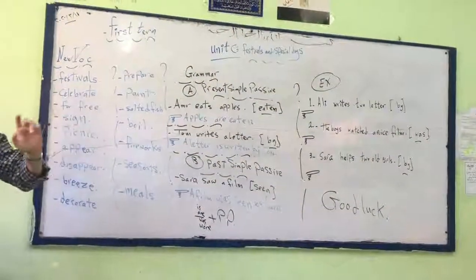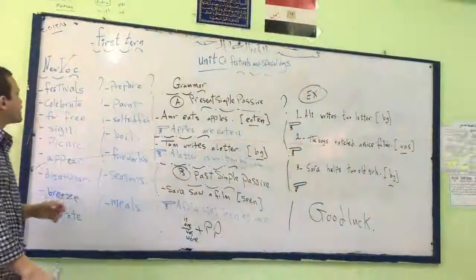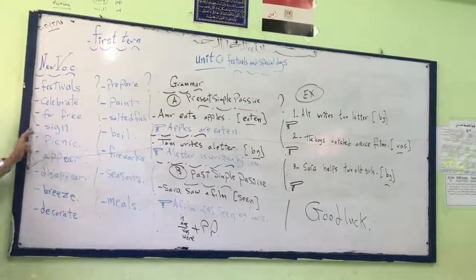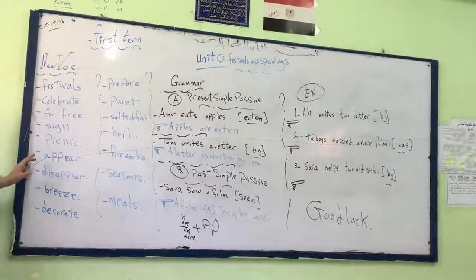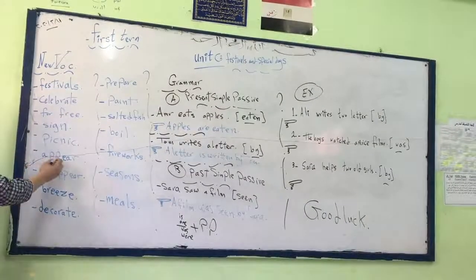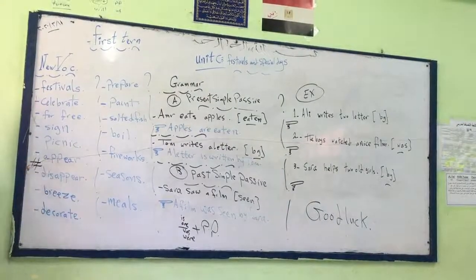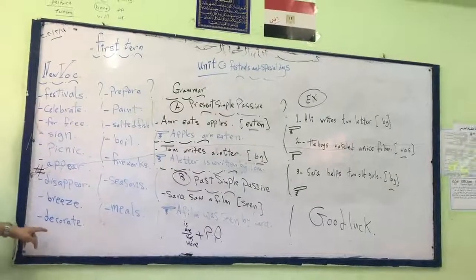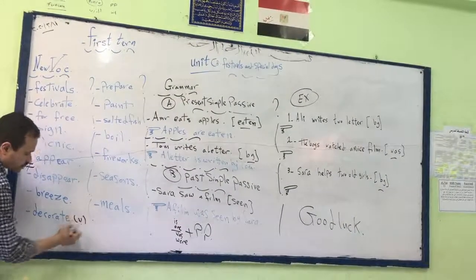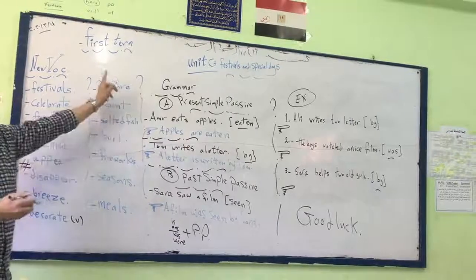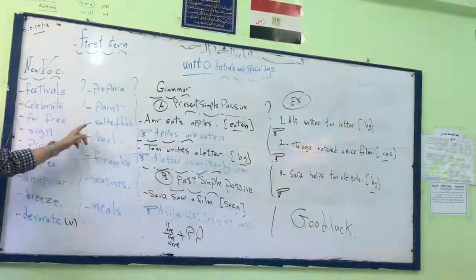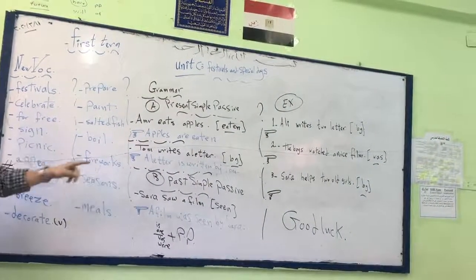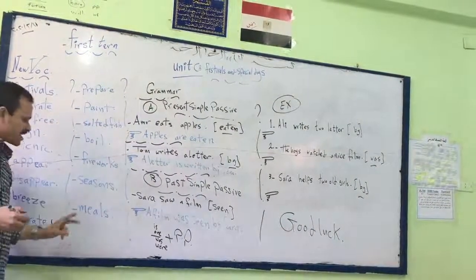After reading, you will find that these will be the most important words from the lesson: festivals, celebrate, for free, sign, picnic, appear, disappear (the opposite of appear), breathe, decorate (and the noun is decoration, this is the verb), prepare, paint, salted fish, boil, fireworks, seasons, and meals.